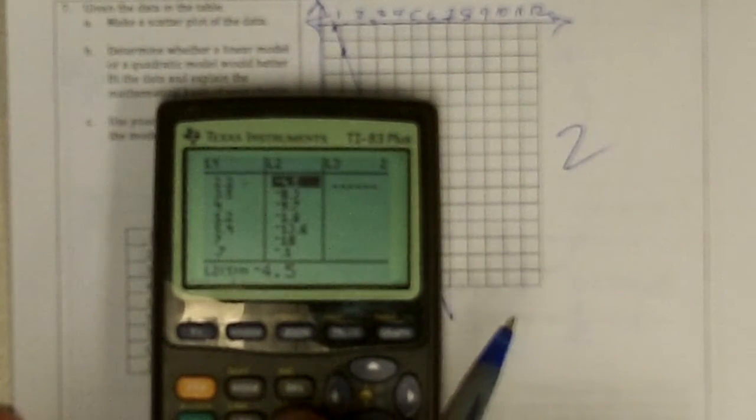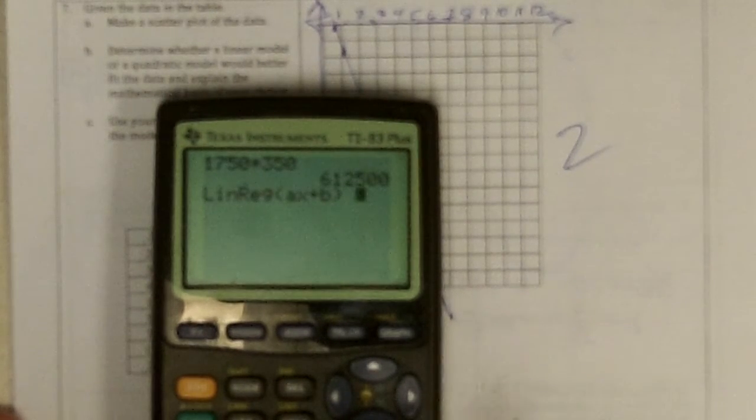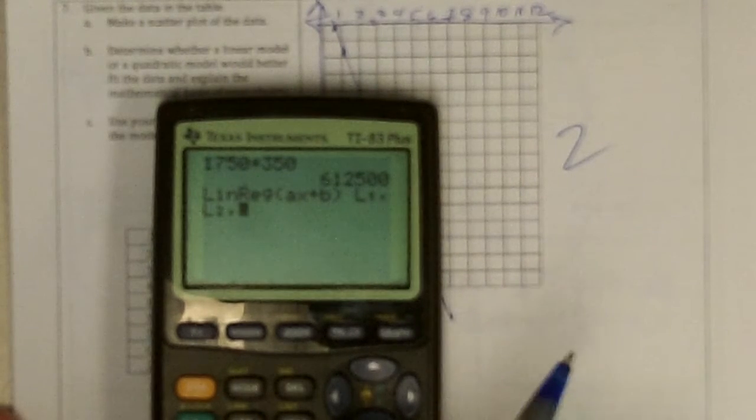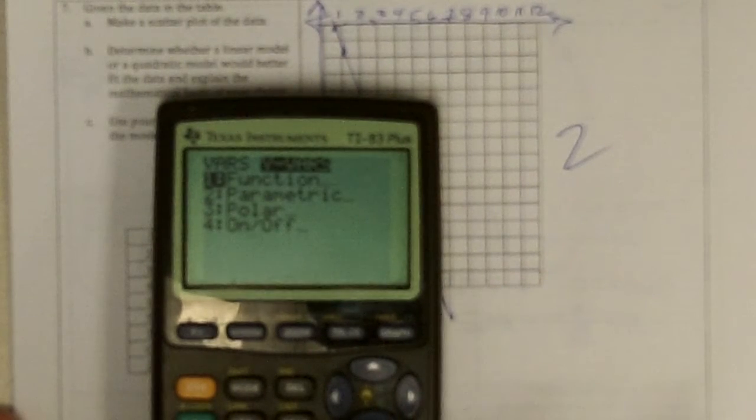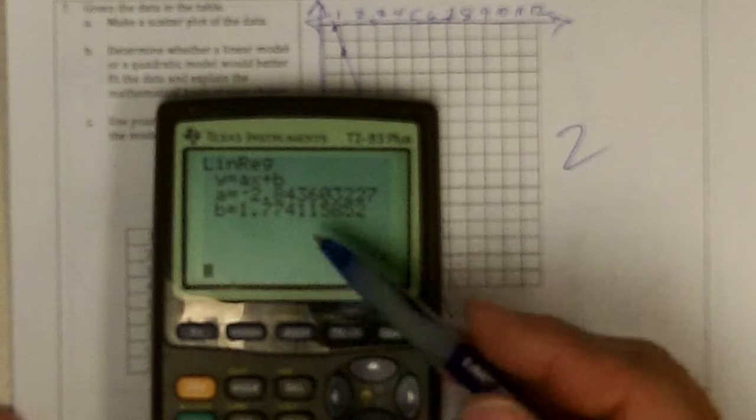So, then I go stat, calculate the line that goes through list 1, comma, list 2, comma.